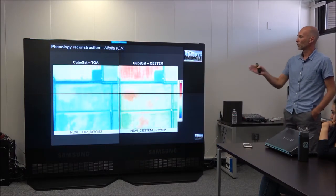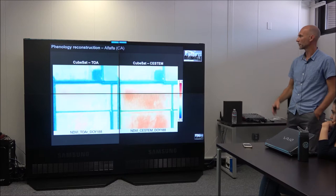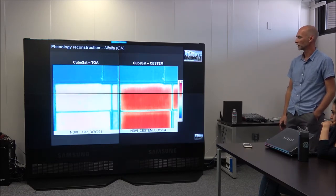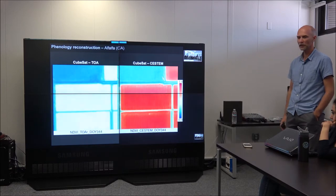And again, you have the raw, uncorrected data on your left, and your corrected CESTEM corrected data on the right. Kind of give you an idea again of the noise in the CubeSat data.